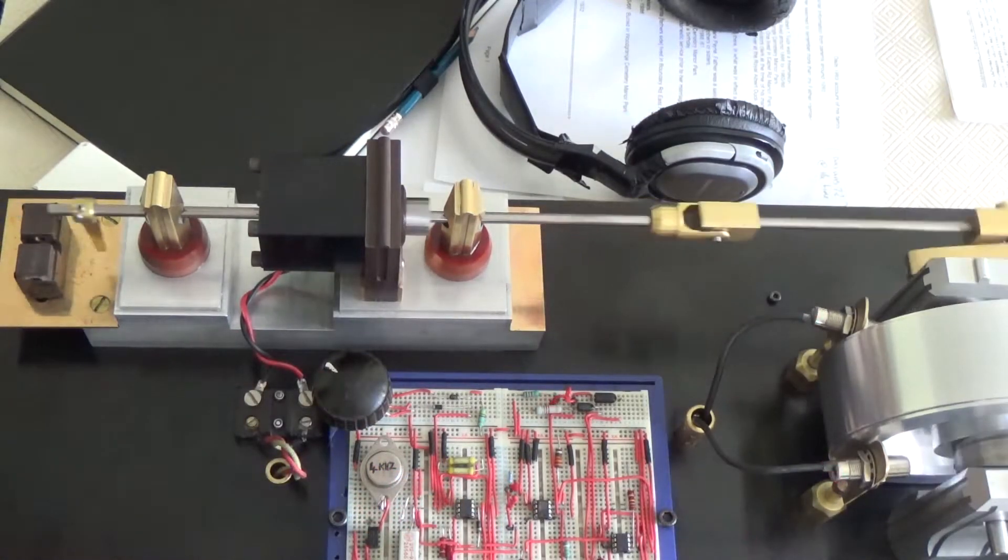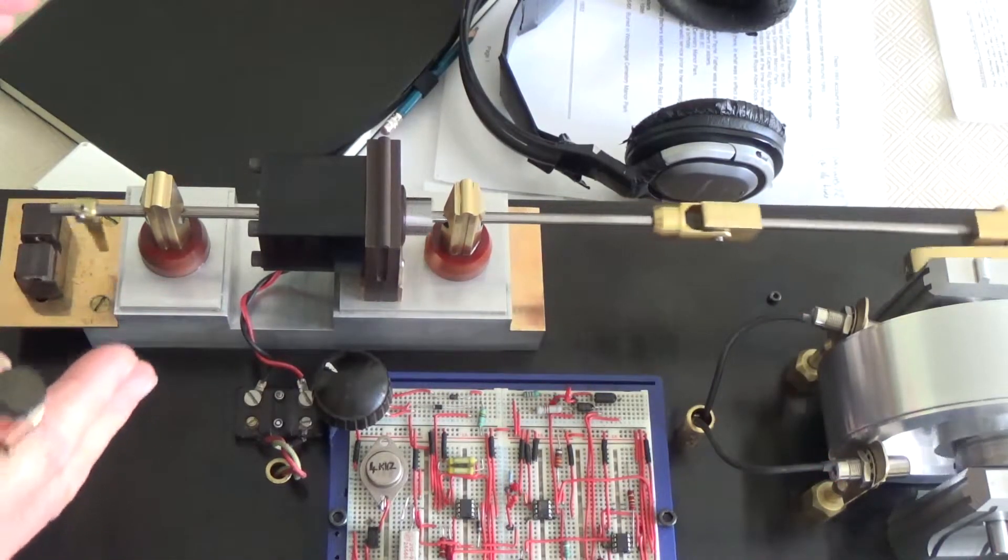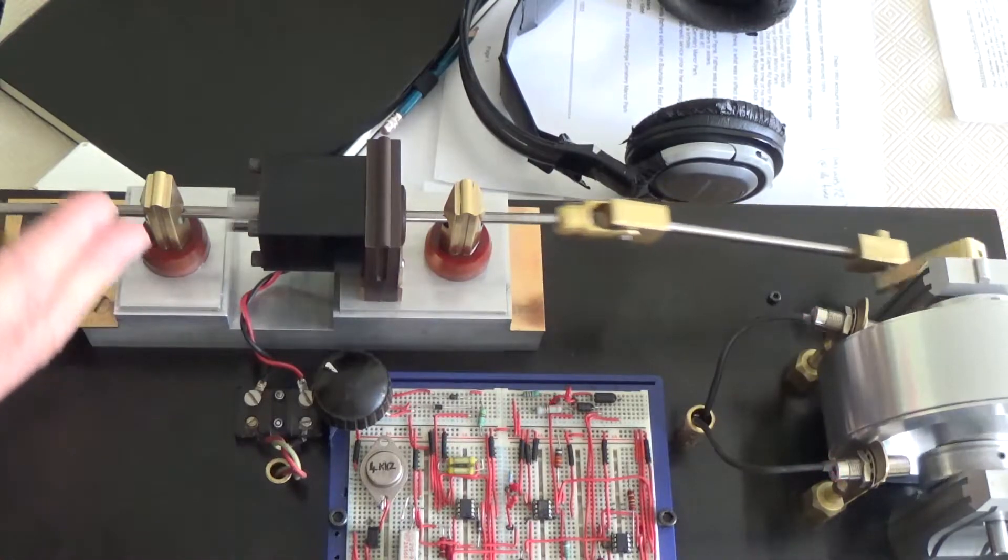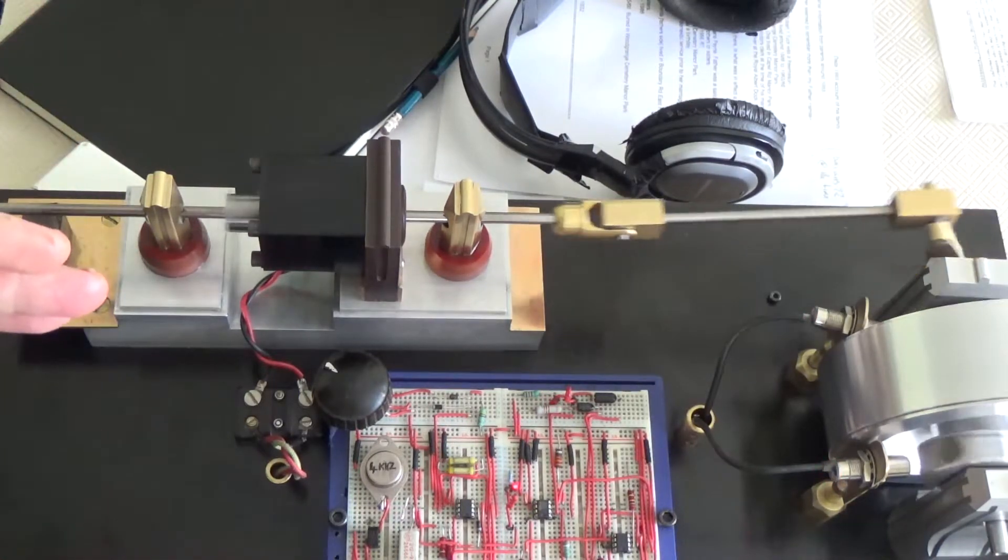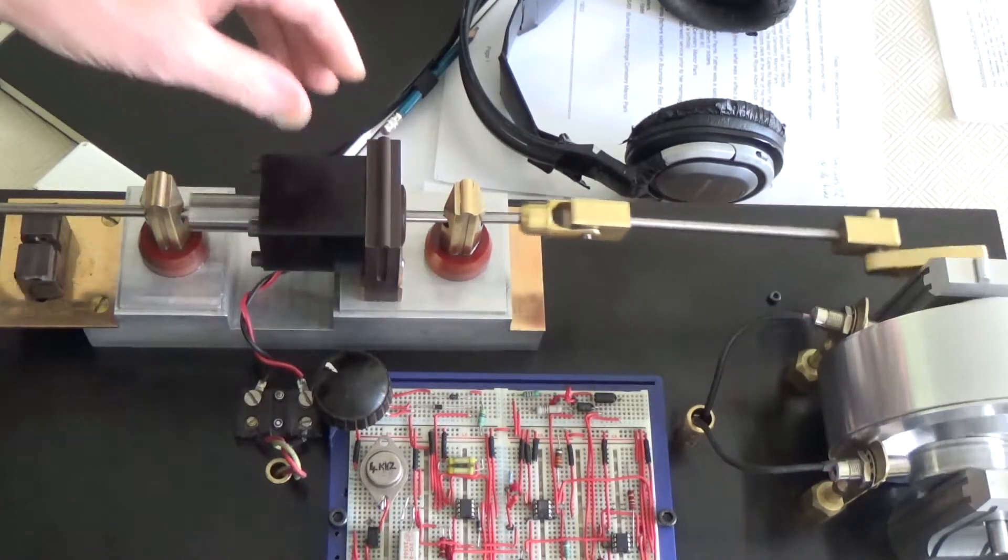PWM is pulse width modulation, which is basically chopping the DC up into sections. And if you vary how much time it is on to how much time it is off, you then get a control of how much flux is in there, and that ultimately controls the speed.